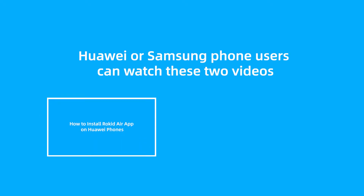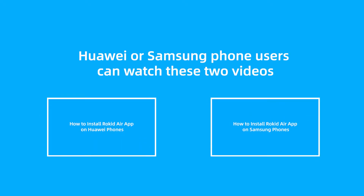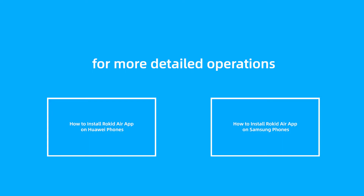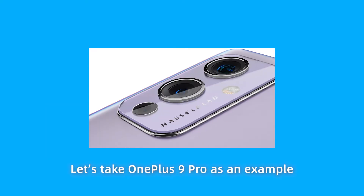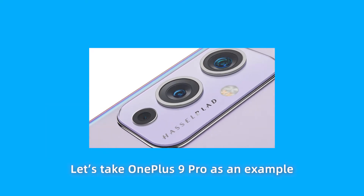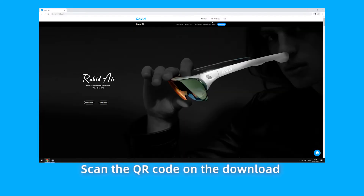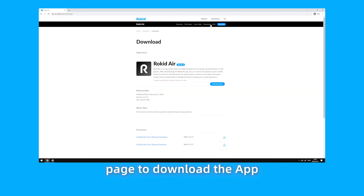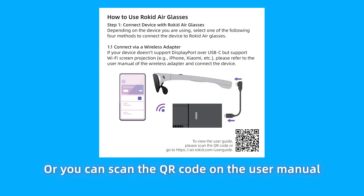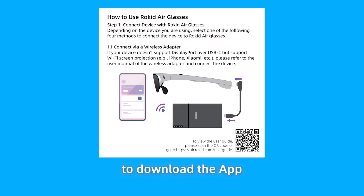Huawei or Samsung phone users can watch these two videos for more detailed operations. Let's take OnePlus 9 Pro as an example. Visit the official RocketAir website at air.rocket.com, scan the QR code on the download page to download the app, or you can scan the QR code on the user manual to download the app.